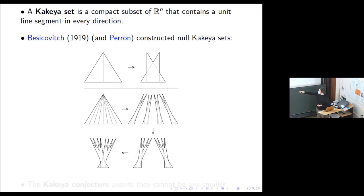You can iterate this procedure. You divide up into more pieces — eight pieces. You push this one into this one, this one into this one, this one into this one, you get this, and then pairwise push them. You get something with smaller measure again. So if you iterate the process, you can have sets with zero Lebesgue measure.